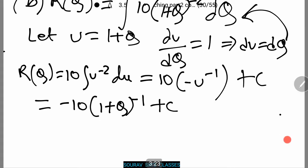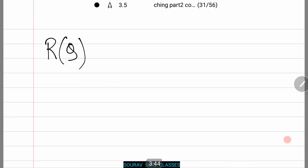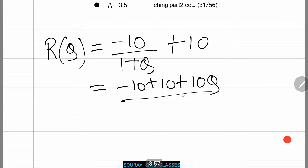Now again we will find R(0) equals 0. Thus we have 0 equals minus 10 plus C or C equals 10. Thus we find that R(Q) equals minus 10 by (1 + Q) plus 10, which is equal to minus 10 plus 10 plus 10Q by (1 + Q), giving us 10Q by (1 + Q). Sorry, it will be 10Q by (1 + Q).